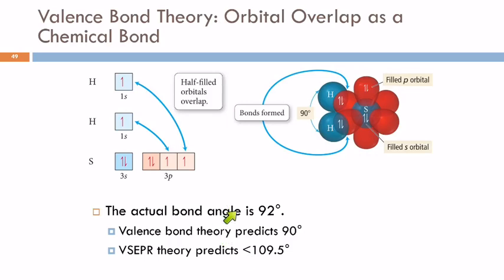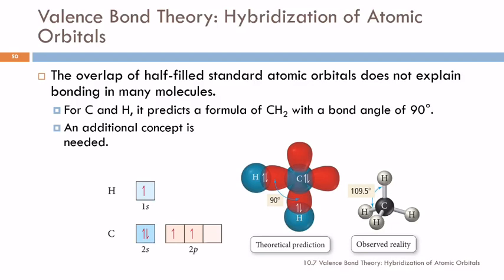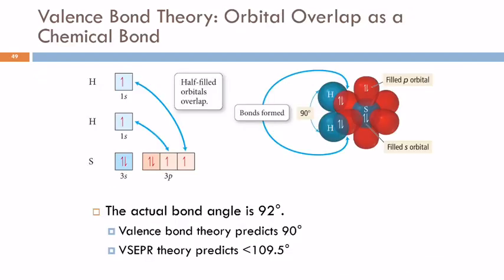It's actually 92. And VSEPR theory, all we can get from VSEPR theory is it's less than 109.5. So VSEPR theory would be okay with either of these in terms of actual bond angle. So kind of wishy-washy on this. What molecular geometry? It would be bent.